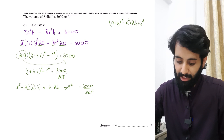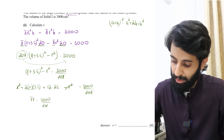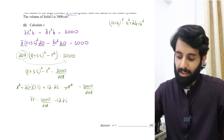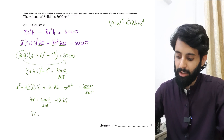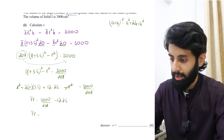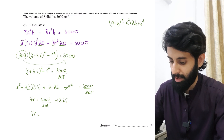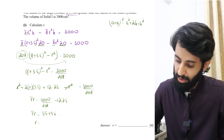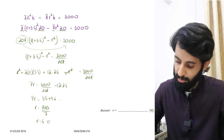After cancellation, 2 × 3.5 × r = 7r, leaving: 7r = 3000/(20π) − 12.25. Using a calculator, 3000 ÷ (20π) ≈ 47.something, then subtracting 12.25 gives approximately 35.49. Dividing by 7, r ≈ 5.07.